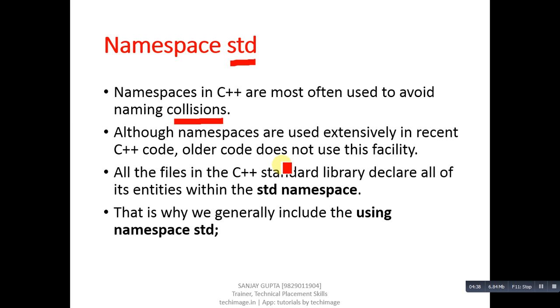This feature is not available for previous codes which were implemented in C++. If you are using modern compilers, then you can use the feature of namespace. If you are using old compilers, then this namespace keyword will not be available. All the files in the C++ standard library declare all of its entities within the std namespace. That is why we generally include using namespace std. If you are implementing your programs in modern compilers, before starting the class, you have to write a statement: using namespace std. This is a predefined namespace. Similar to predefined, you can also create your user-defined namespaces. Thank you for watching this video.